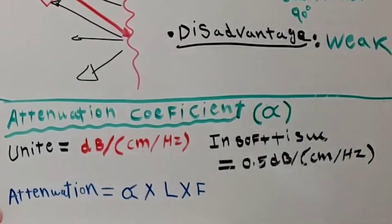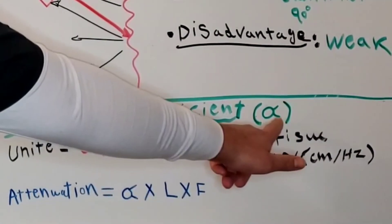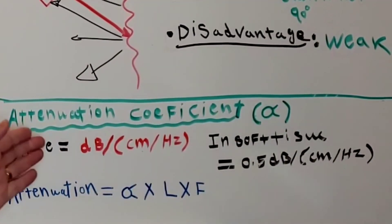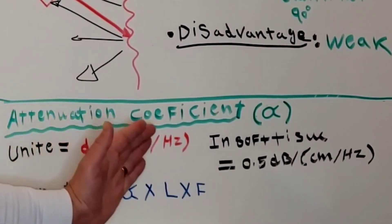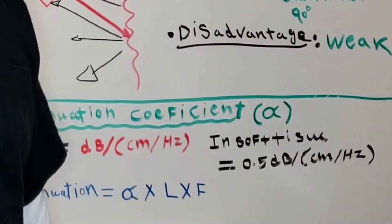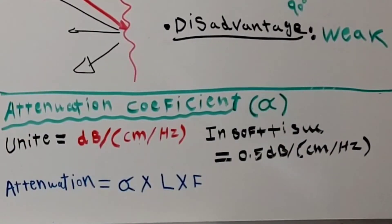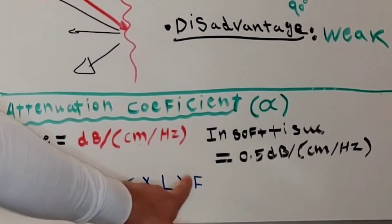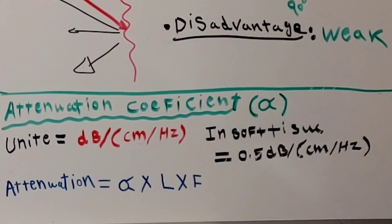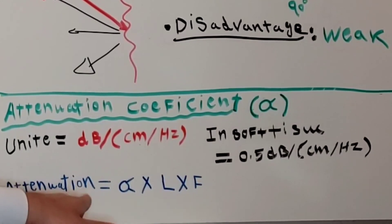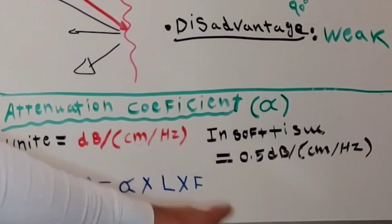The attenuation coefficient — abbreviated as alpha — is used to measure attenuation. Its unit is decibels per centimeter per hertz. In soft tissue, the attenuation coefficient is equal to 0.5 dB per centimeter per hertz. To calculate total attenuation, multiply the attenuation coefficient by the depth and by the frequency. From this formula, attenuation increases when the coefficient increases, when depth increases, and when frequency increases.